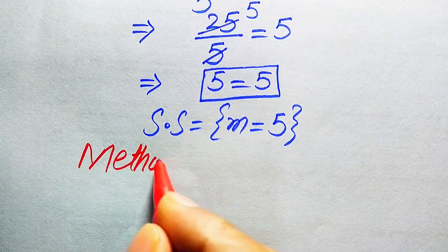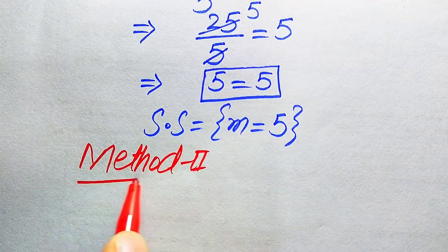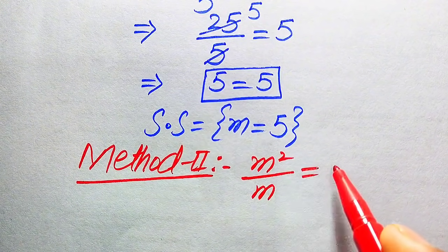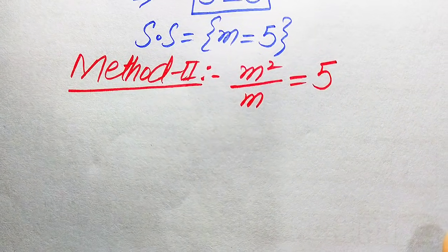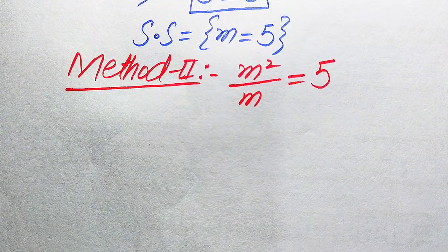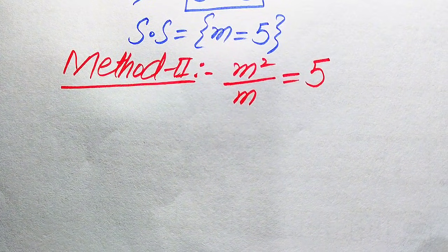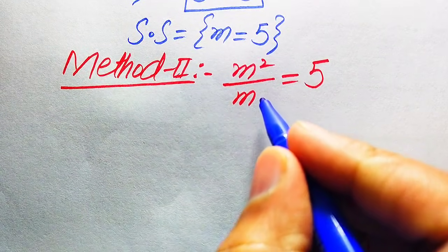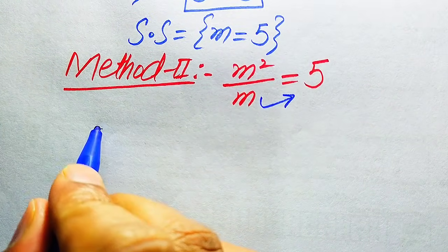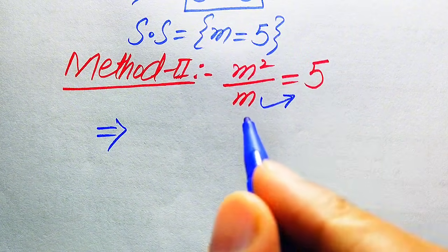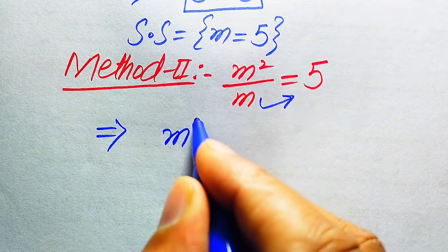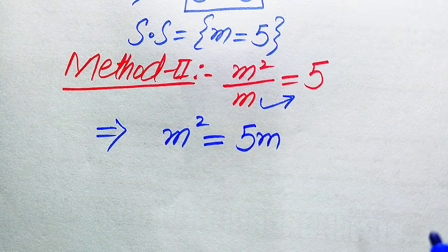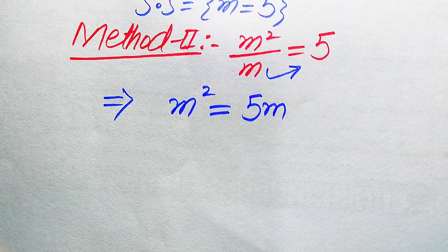In the second method, we start again with m squared divided by m equals 5. This method is more detailed. We move m to the right hand side — since it was dividing, it now multiplies — giving us m squared equals 5m.